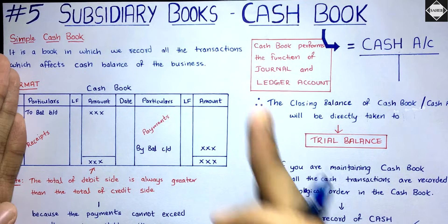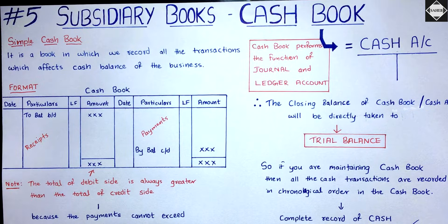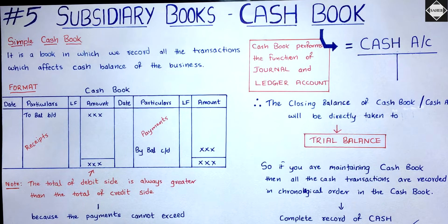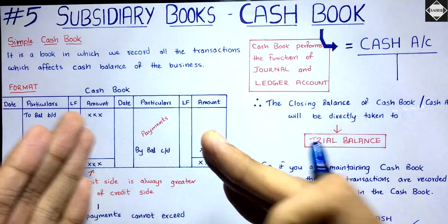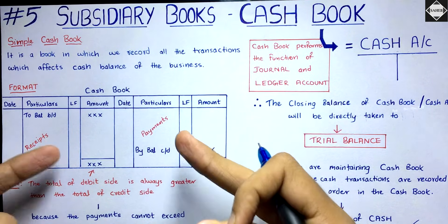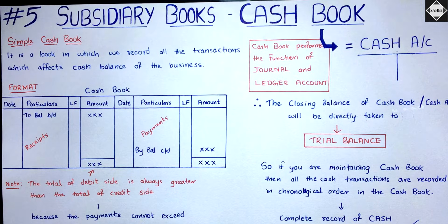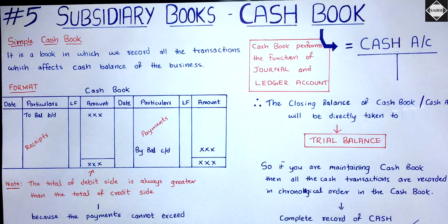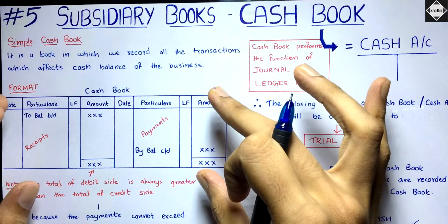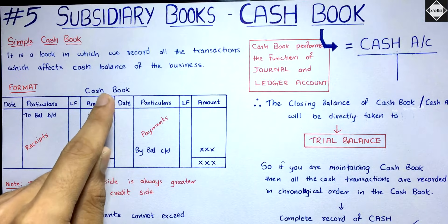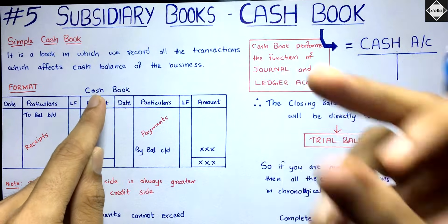Now, the format of the cashbook is very simple. You have a debit side and a credit side: date, particulars, ledger folio, amount — on both sides. The recording is done the same way as in the cash account. For example, if you have paid salary of 5,000, your cash is decreasing. Cash is an asset account with a debit balance, so it is decreasing — you credit it: 'By Salary 5,000.'